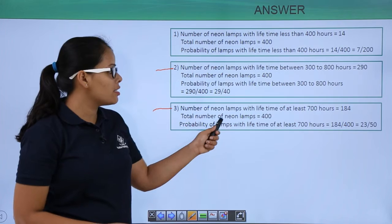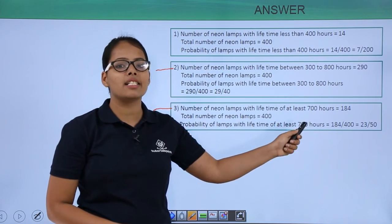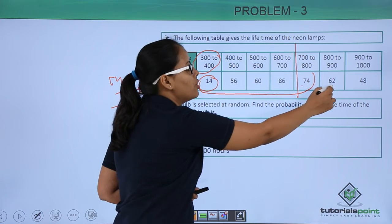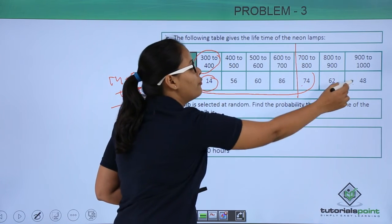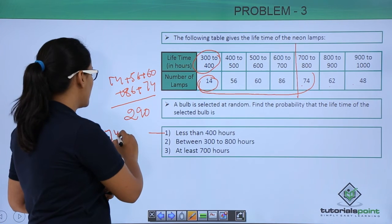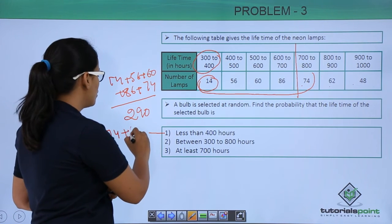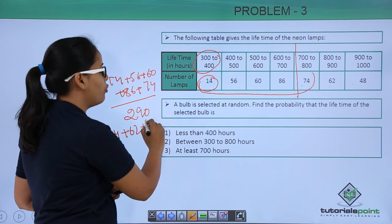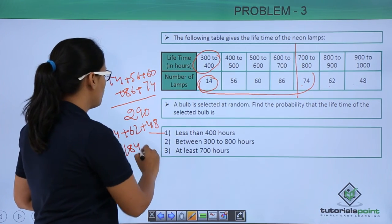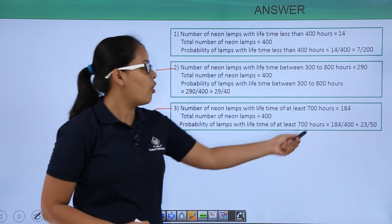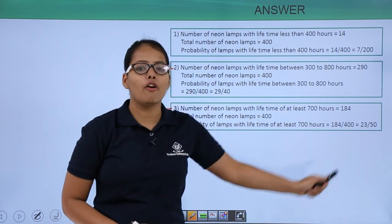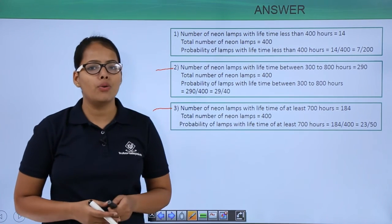In the third case, you needed to consider at least 700 hours. So we took 74, 62, and 48 into consideration, because you need the lifetime of at least 700 hours. That gives 74 plus 62 plus 48, and on summation you get 184. That's how you got the probability of 23 is to 50.